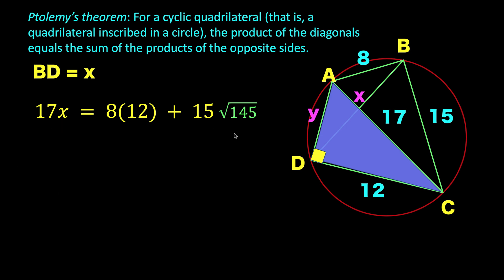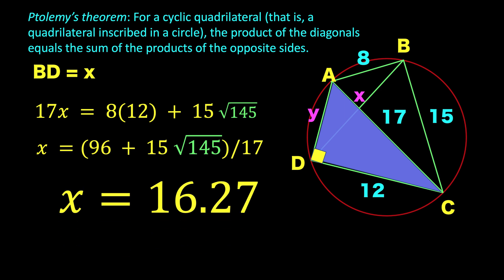So, we now have this equation with only one unknown. This can now easily be solved. Solving for X, we divide both sides by 17. And simplifying further, we have X equals 16.27.